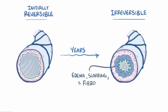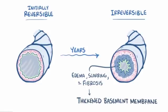Edema, scarring, and fibrosis build up, leading to thickening of the epithelial basement membrane, which permanently reduces the airway diameter.